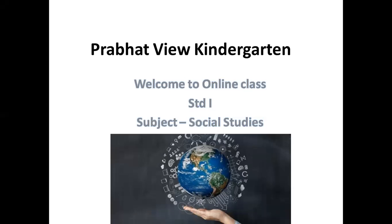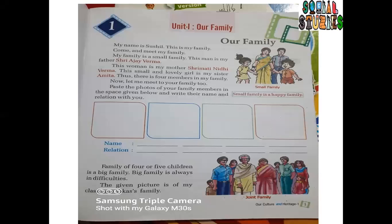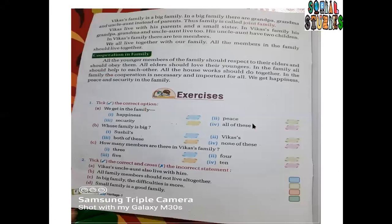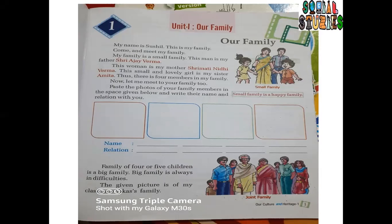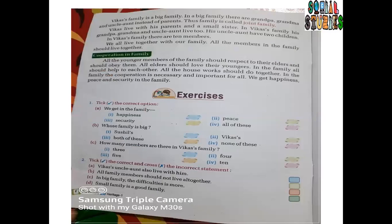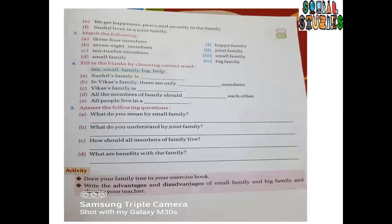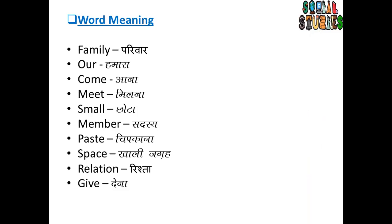We are going to study Unit 1 — Family. We had to fill the box about your family and family types: small family, big family, joint family. Exercise 1, 2, 3, 4, 5 — all of them have got the correct answer.